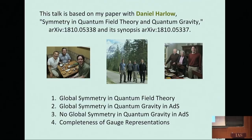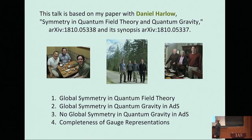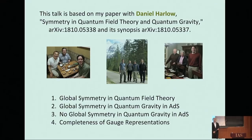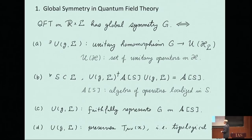This is the plan of my talk. I will first define what we mean by global symmetry in quantum field theory. I'd like to discuss various technical details that appear when dealing with symmetry in quantum field theory. Then I'm going to define what we mean by global symmetry in quantum gravity. The purpose is to show that in the context of ADS-CFT correspondence, there is no such thing as global symmetry in quantum gravity in ADS.